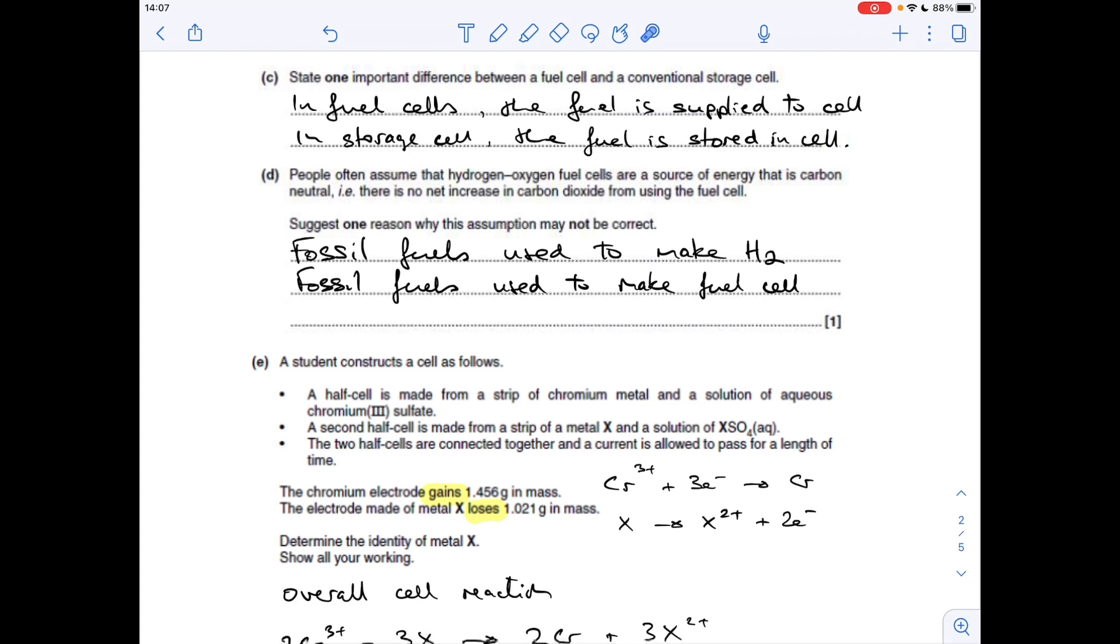Part D now, this assumption that hydrogen oxygen fuel cells may not be carbon neutral. You could say something like fossil fuels are used to make the hydrogen. Typically, hydrogen will be produced by electrolyzing water, and you've got to supply electricity to do that, which will most likely come from fossil fuels. The other thing you could say is fossil fuels are used to make the fuel cell itself.